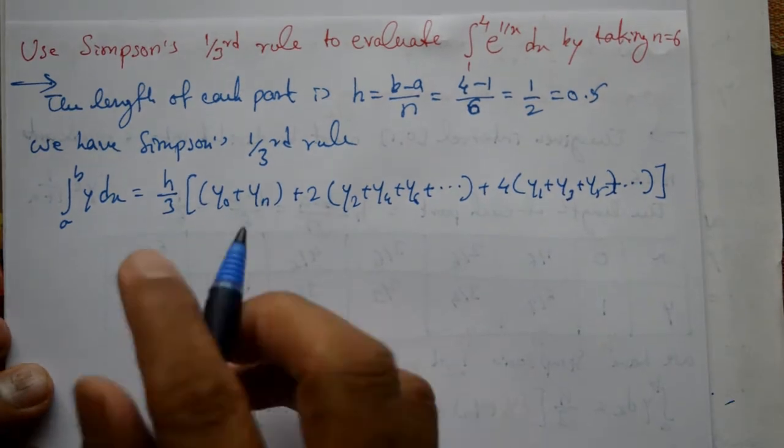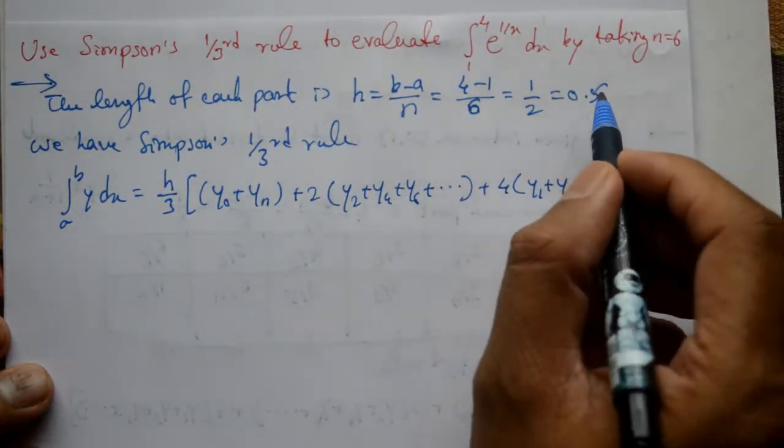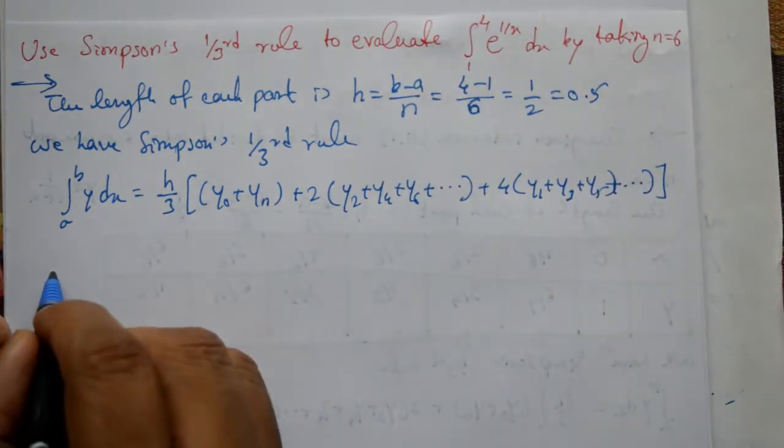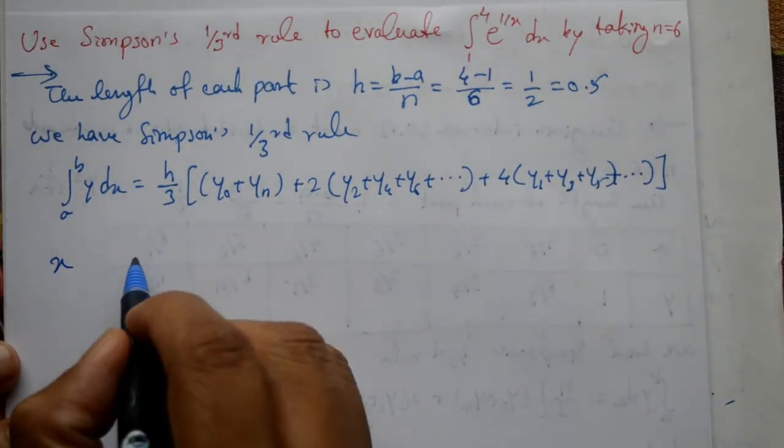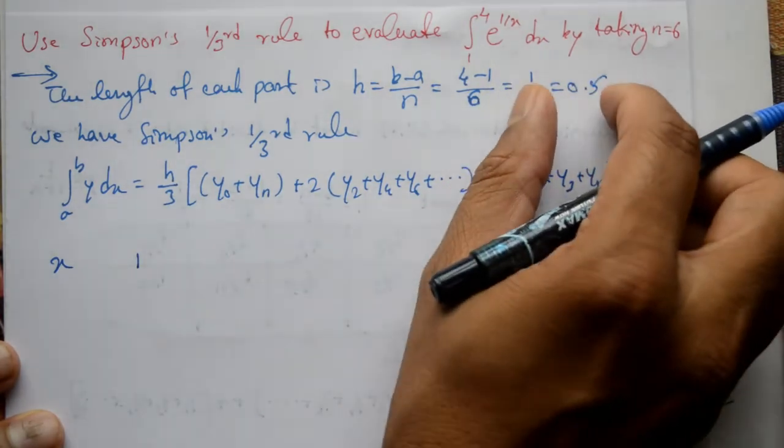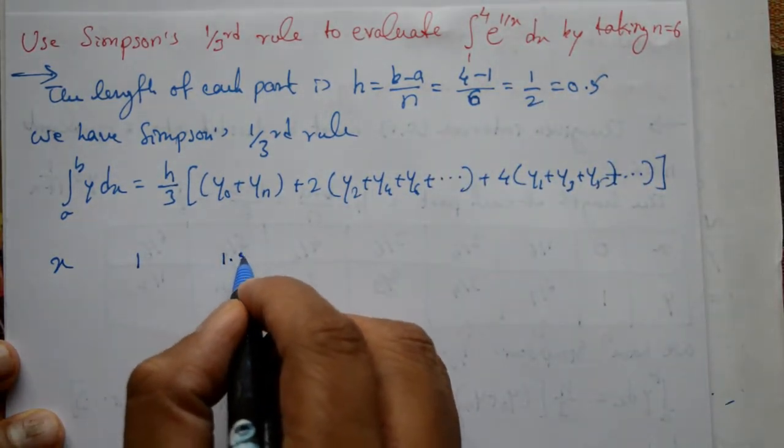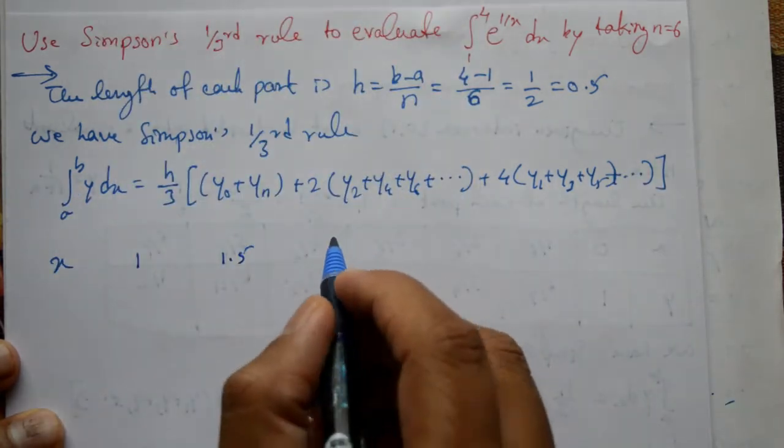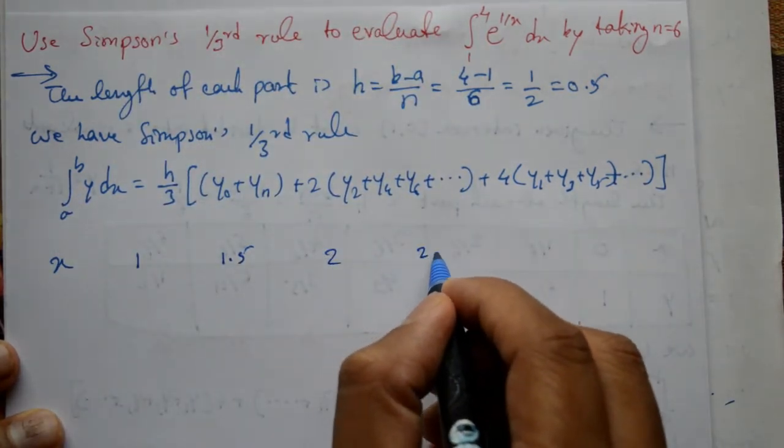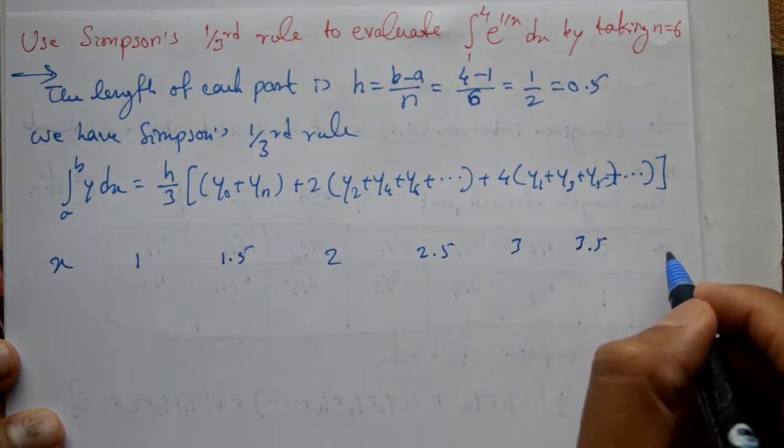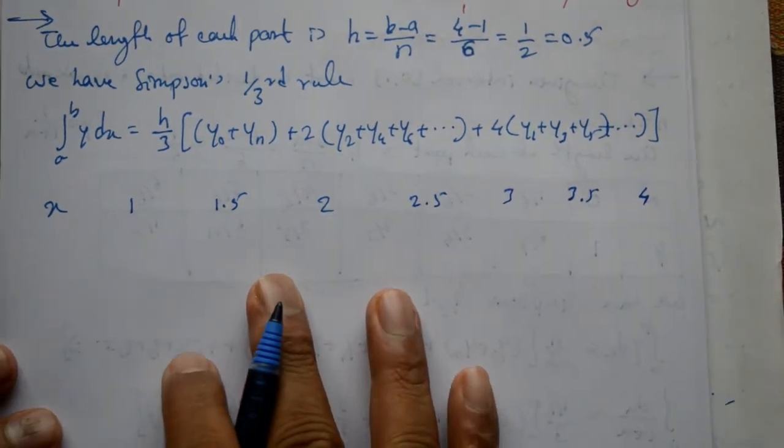Now, x is equal to, step size 0.5 hai. Now integral 1 to 4 hai, x value lena hai. First 1 lehenge, uske baad distance equidistance 0.5 hai. E hoga 1.5 hoga, baad me again 0.5 add karna hai, 2 hoga, 2.5 hoga, 3, 3.5 and it is 4 like this.